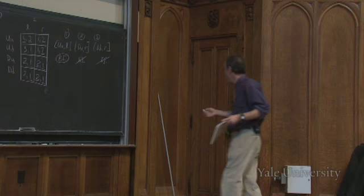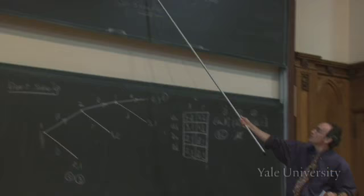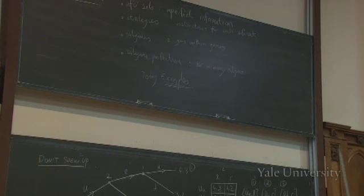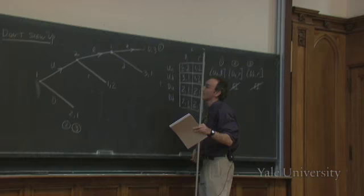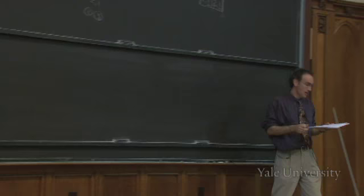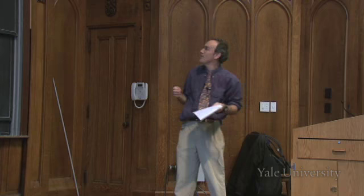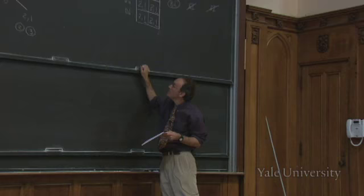What we want to do next is translate this into a tree, write down the strategies, and see which of these Nash equilibria are sub-game perfect. To do that, we need to start by identifying the sub-games.